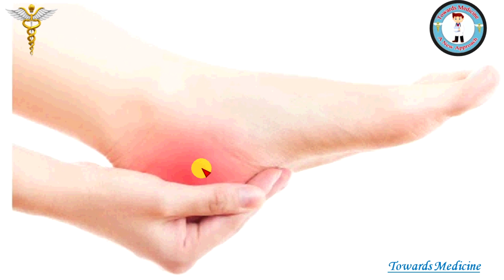Os Trigonum interferes with normal plantarflexion at the ankle joint. In persons such as runners or dancers, in whom there is strong or forced plantarflexion, it causes interference with the Achilles tendon and surrounding tissues.